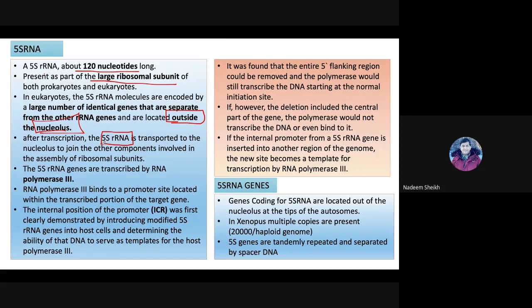Once transcription is done, 5S RNA molecules are transported to the nucleolus because the ribosomal subunit is assembled there. Ribosomal proteins are translated in the cytoplasm and also move to the nucleolus, so that the ribosomal subunit can be assembled in the nucleolus.